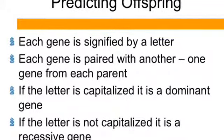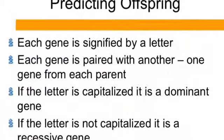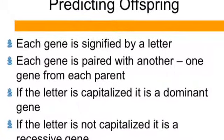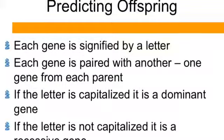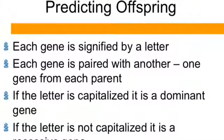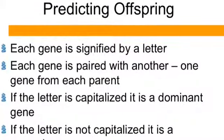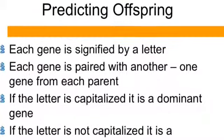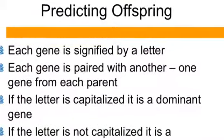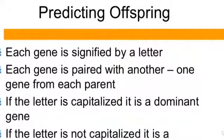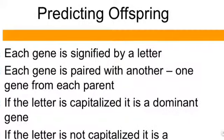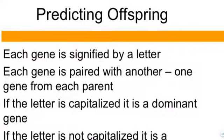When we get ready to do these problems, each gene is signified by a letter. Each gene is paired with another — one gene comes from each parent. If the letter is capital, it's dominant, and if it's not capital, it's recessive.